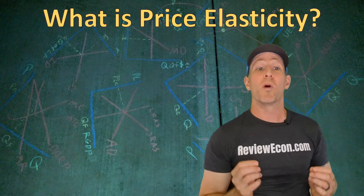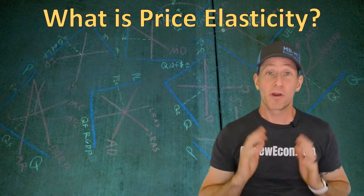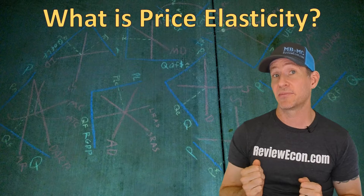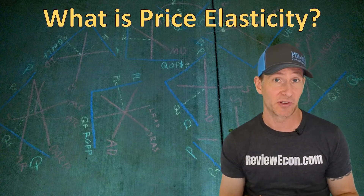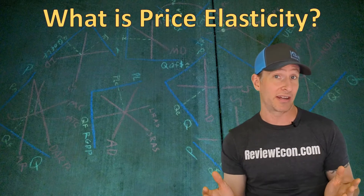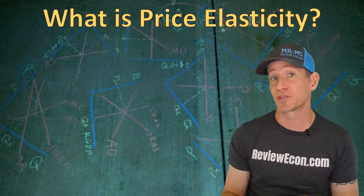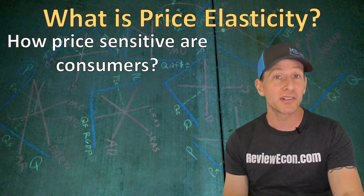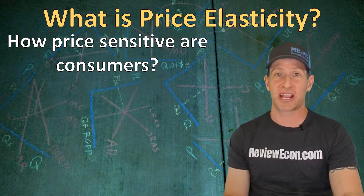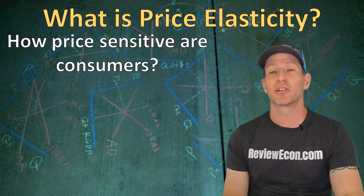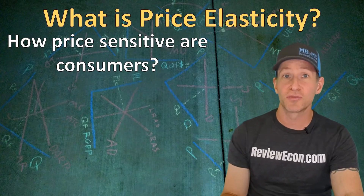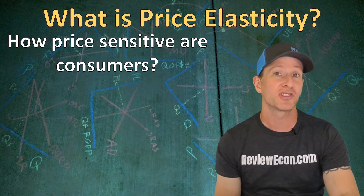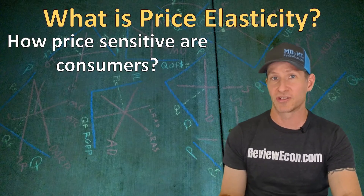First of all, we need to know what is price elasticity. We already know that when prices go up, people buy less goods and services and the quantity demanded decreases. We also know that when prices decrease, the quantity demanded increases as consumers are more willing to buy that particular good. Price elasticity is how much more or less people buy when there is a change in price — essentially, how sensitive consumers are to a price change and how much that change affects the quantity demanded.